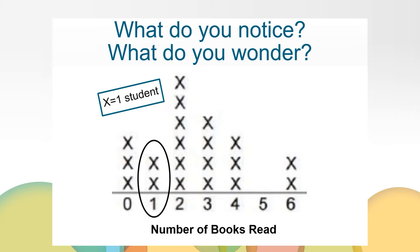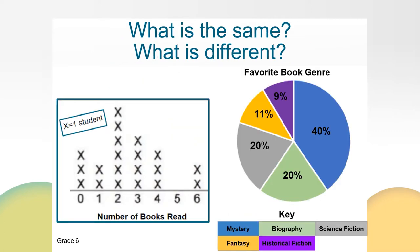Let's compare Ms. Hogan's line plot to the circle graph to the right. What is the same? What is different? Let's talk about what's the same. Both of these graphs are about books. In the line plot, we can see that two students read one book and two other students read six books. This is similar to the circle graph — 20% of students selected biography as their favorite genre and 20% of students selected science fiction as their favorite genre. Both graphs have a key to help you understand what the graphs represent.